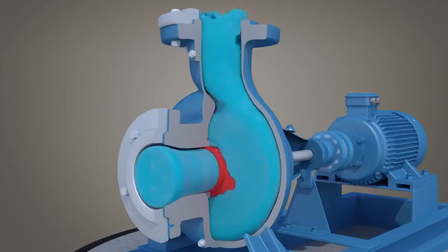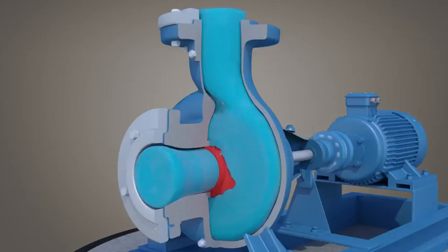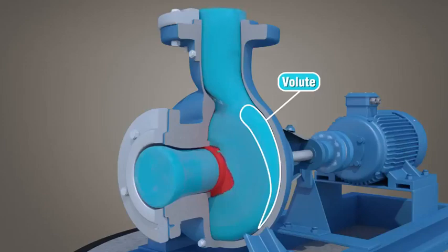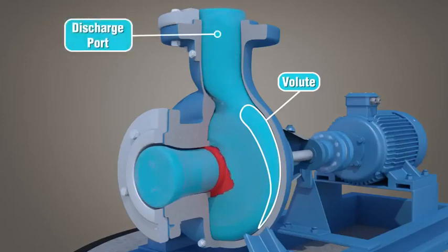As the impeller spins, centrifugal force moves liquid from the eye outward along the impeller blades, toward the inside curved funnel area of the casing, known as the volute. As the liquid travels along the volute, its velocity decreases while its pressure increases. The now higher pressure liquid flows to the discharge port of the pump and out into the piping system.